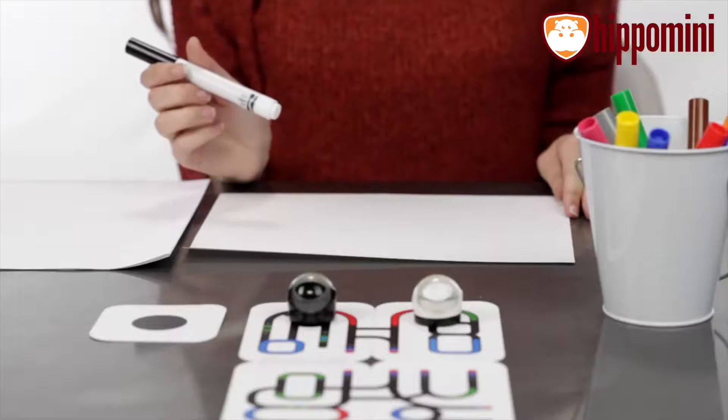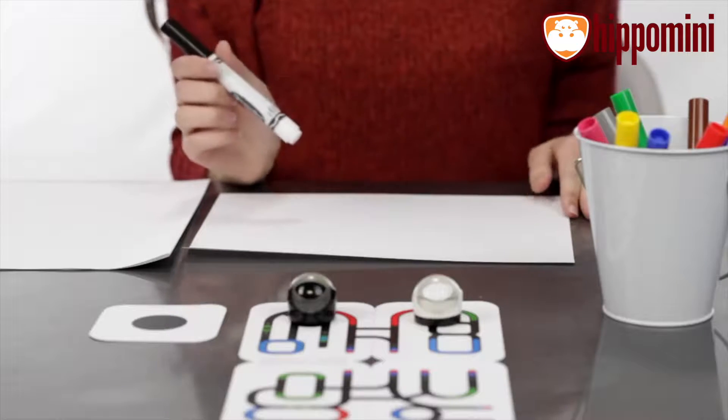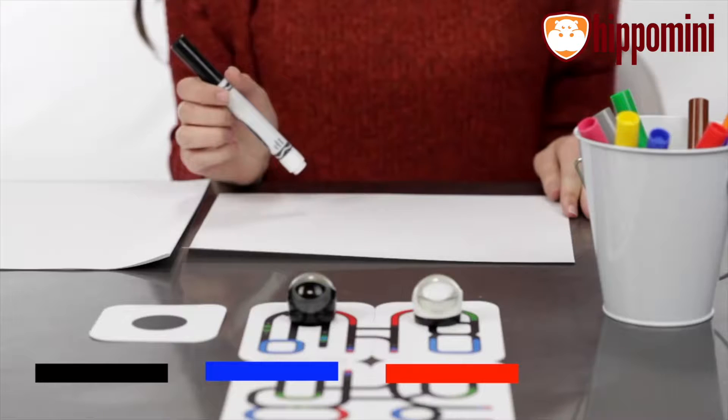To really use OzoBot's color language you'll need a black, blue, red, and green marker.